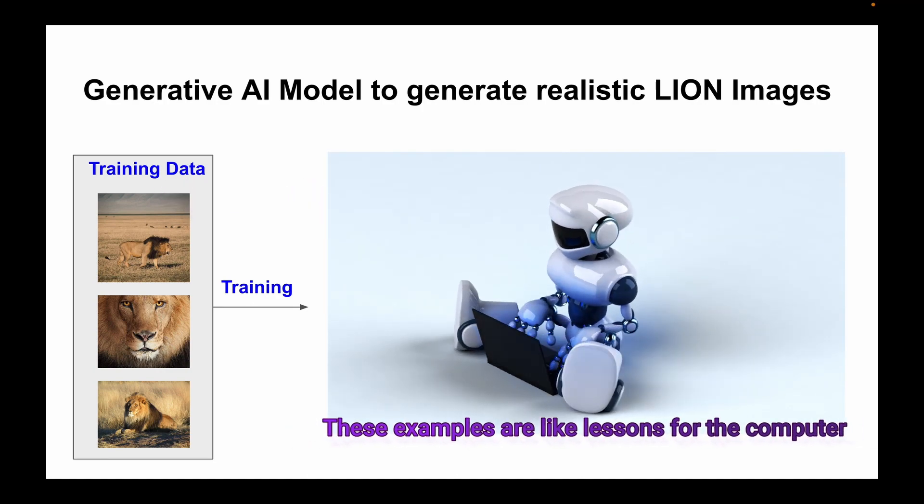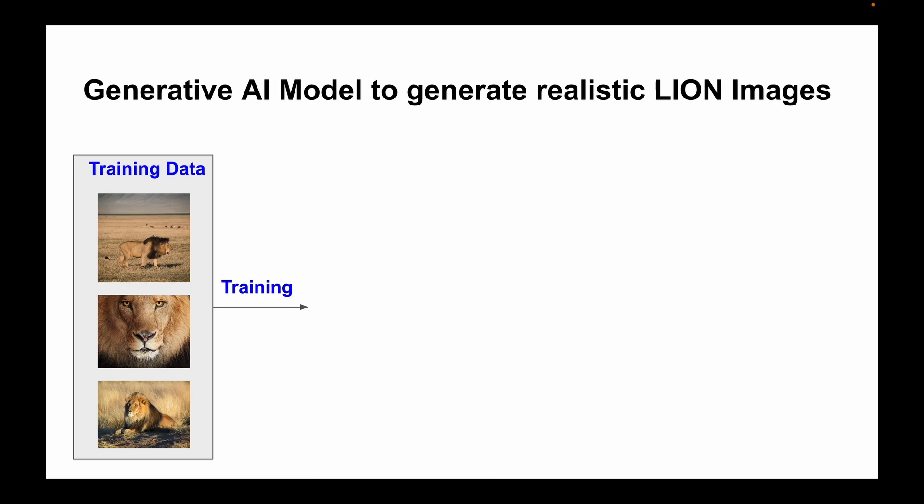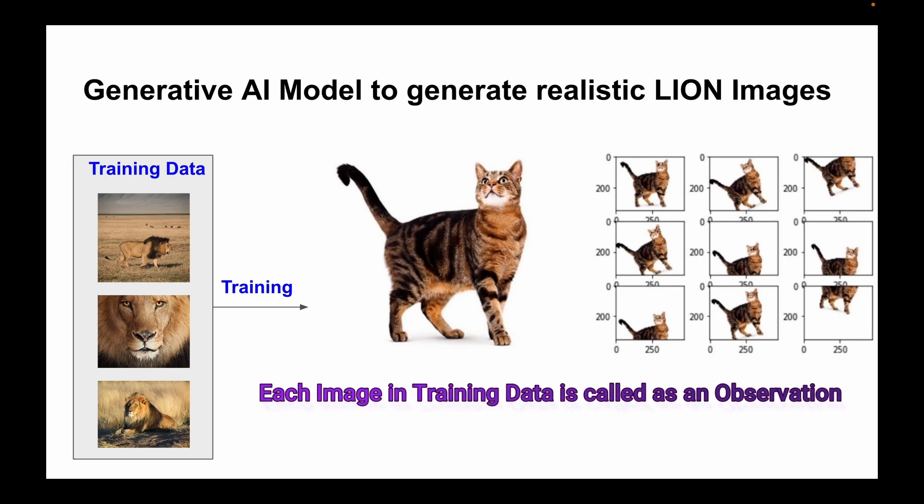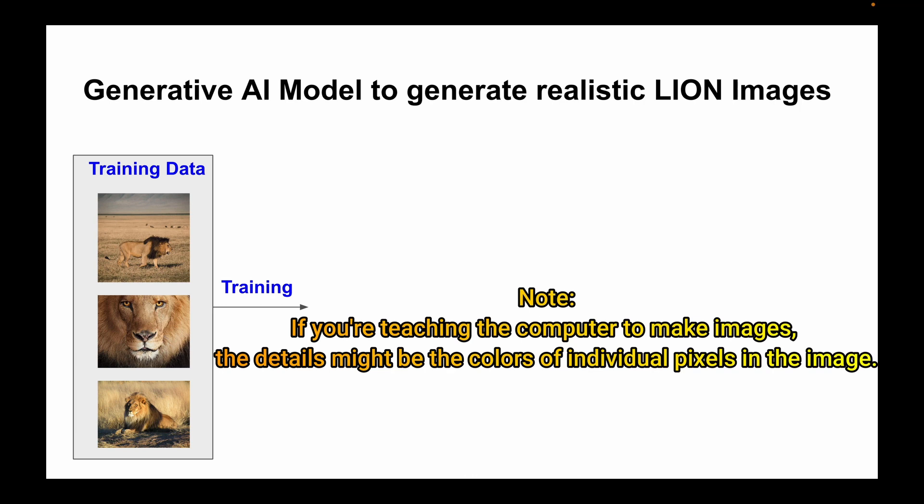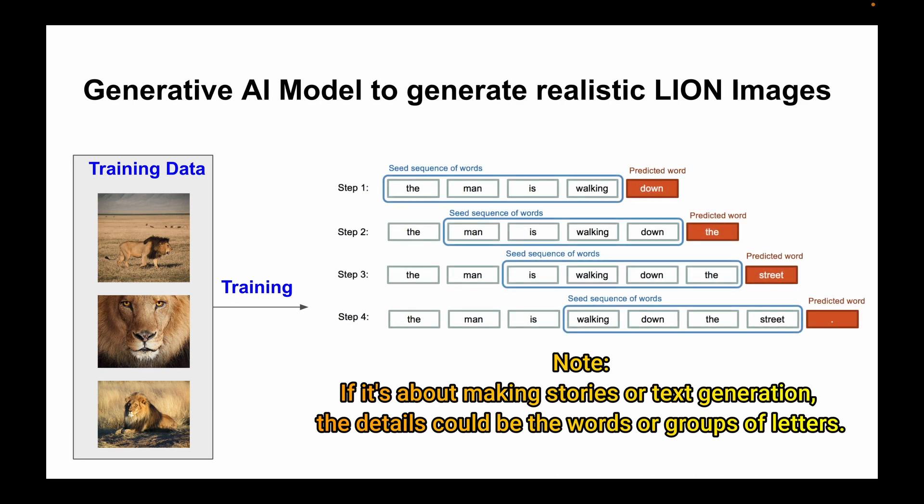These examples are like lessons for the computer, and each image in the training data is called an observation. These observations or images are made up of many features. If we're teaching a computer to make images, the details might be the colors of individual pixels. If it's about making stories or text generation, the details could be words or groups of letters.